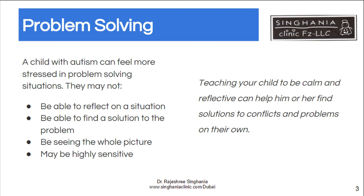Children with autism have difficulty with problem solving because they don't see other aspects of a situation or the other person's perception of that situation. They are unable to reflect on their own behavior. So they only see parts and not the whole picture, and they become very sensitive and may have sensory issues as well.